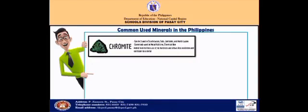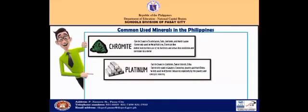We have chromite. It can be found in South Luzon, Cotong Zambales, and North Luzon. Commonly used in metal additives. It's added to metal because of its hardness and allows less oxidation and corrosion.